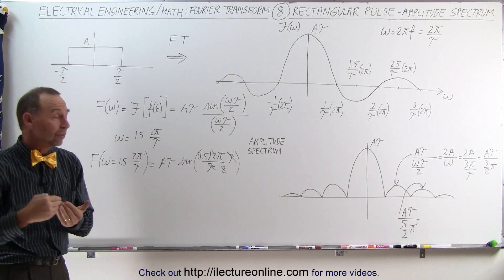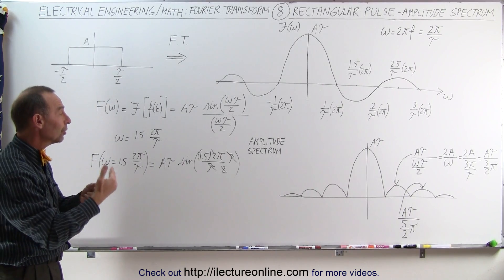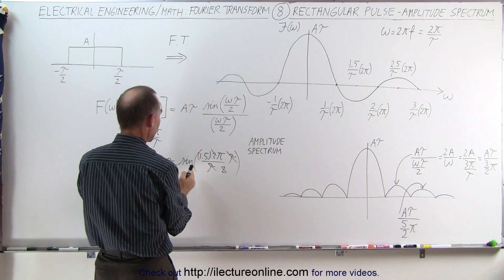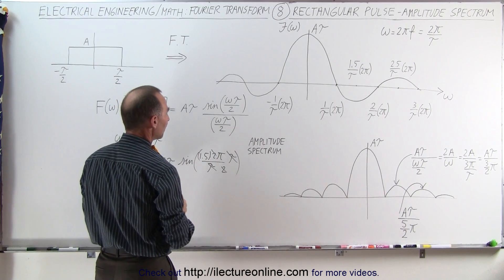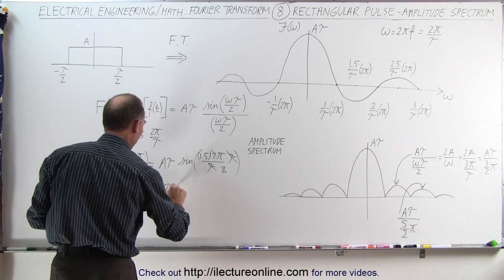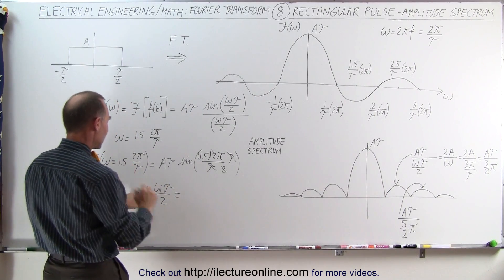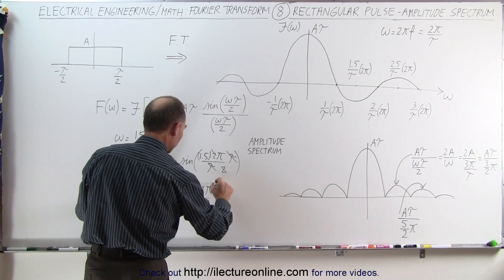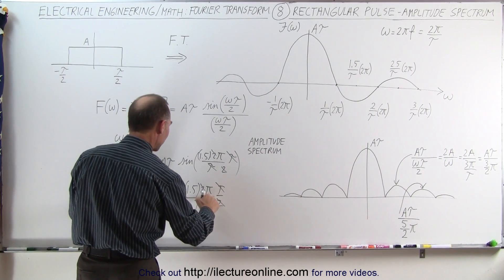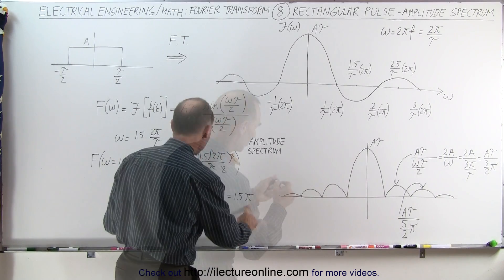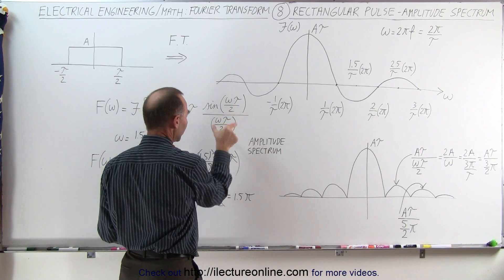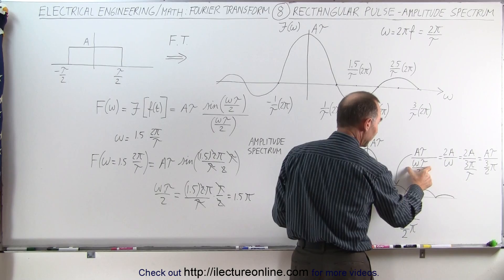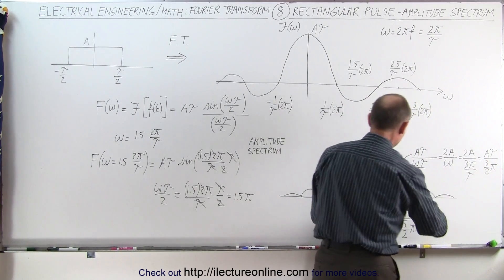At 270 degrees, the sine is equal to negative 1, so we end up with a negative amplitude. We then divide that amplitude: it's negative 1 times A times tau divided by the quantity omega tau over 2. When omega equals 1.5 times 2 pi over tau, the denominator becomes 1.5 times 2 pi divided by tau times tau over 2, which simplifies to 1.5 times pi. So we get A times tau times negative 1 divided by 1.5 pi, and the amplitude is A times tau divided by 1.5 pi.